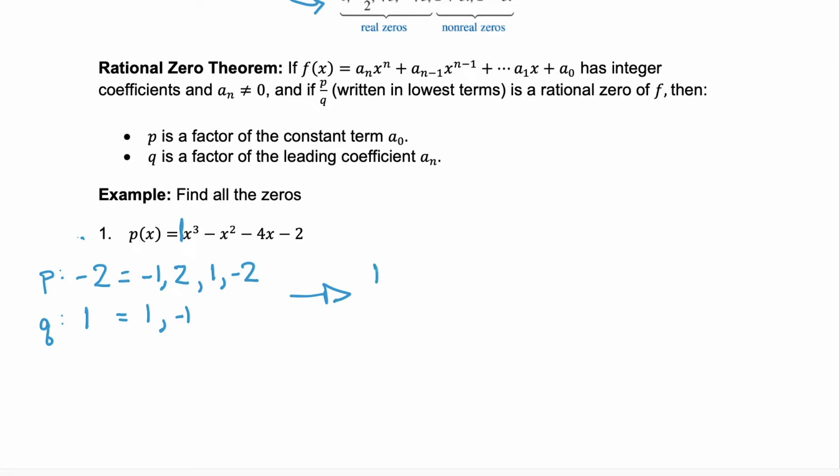Next, you're going to take each of these factors and write them as p over q. So I like to start with the first denominator. I'm going to put each of these p's over that 1. That'll give us -1/1, 2/1, 1/1, and -2/1. Next, we're going to use the denominator of -1 and put each p over. So -1/-1, 2/-1, 1/-1, and -2/-1. Then we want to simplify each of these and make sure we don't have any duplicates. We have -1, 2, positive 1, -2, positive 1, -2, -1, and positive 2. Notice that we have lots of duplicates. So if we eliminate our duplicates, our possible zeros would be -1, 1, 2, and -2.